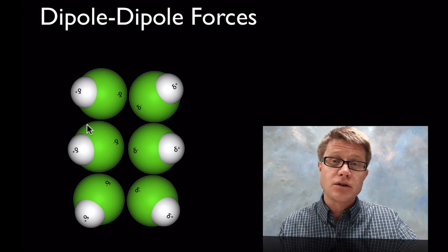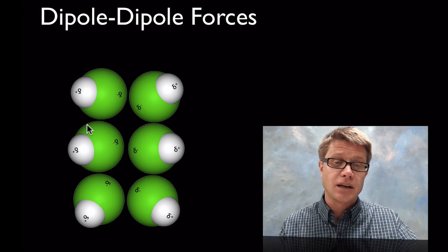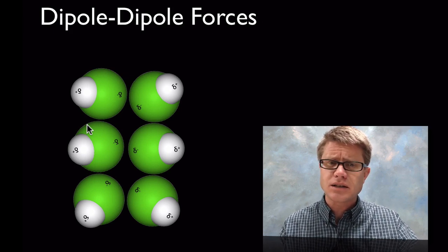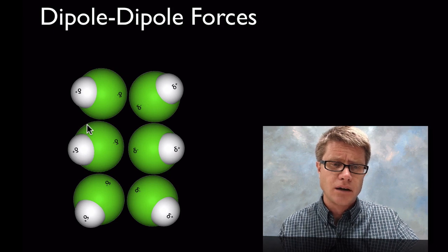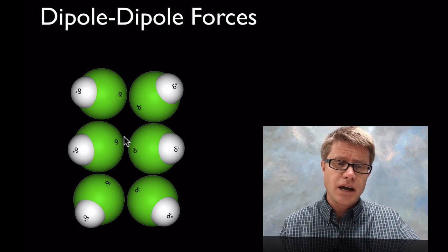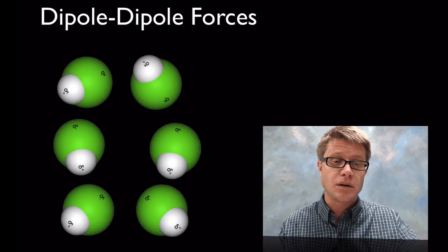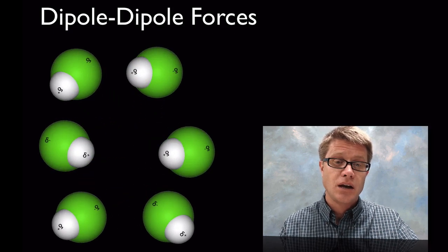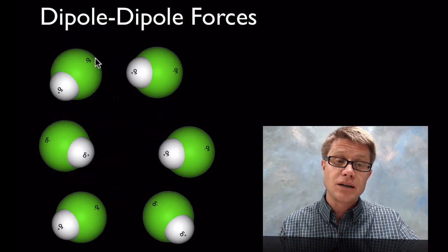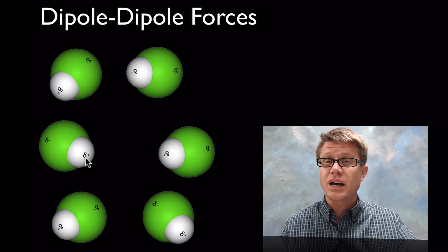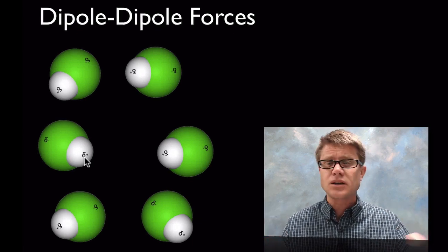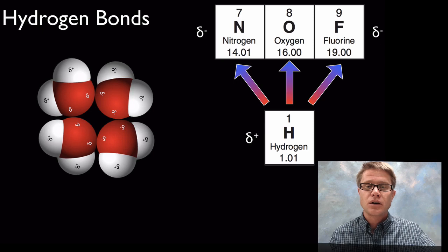If I had a bunch of hydrochloric acid molecules arranged with all their negatives on the inside and positives on the outside, how would they orient themselves? They're going to orient so we have a negative to a positive to a negative to a positive, alternating all the way through. So imagine in hydrochloric acid we have all these interconnections going on.